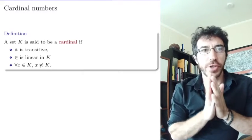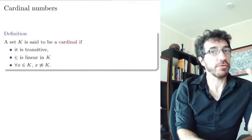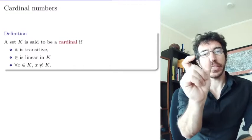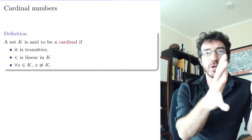Okay, so now the objective for this video is the following. For the natural numbers, for finite sets, we define the cardinality of a finite set to be the unique natural number that is equimorphic to it.